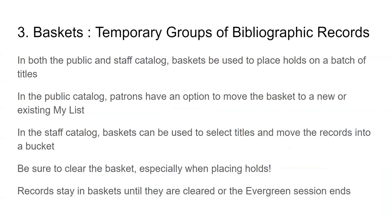Now we're going to talk about bibliographic records — title records. There's a temporary group which is baskets. When you're in the staff catalog or the public catalog, there's a basket that can be used to do things like place holds on a batch of titles or make a book list using My List or do all sorts of other things. The basket, like the item batch, is temporary — records will stay in the basket until you clear them or until your Evergreen session ends.